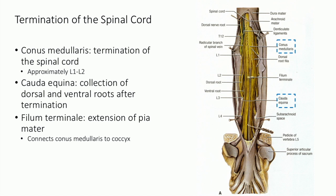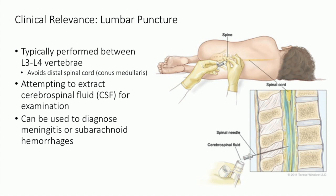The cerebrospinal fluid has clinical importance. In a lumbar puncture, a needle is inserted around the levels of L3-L4 — below where the conus medullaris ends at L1-L2. This allows insertion into the subarachnoid space to extract CSF without damaging the spinal cord itself.